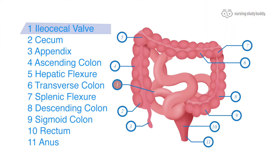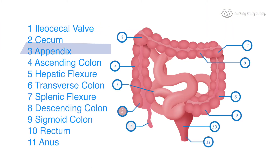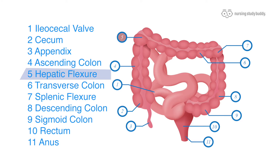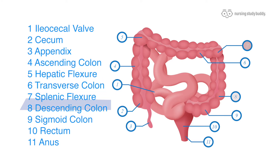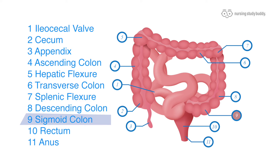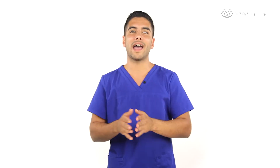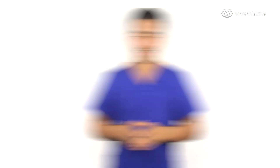First we have the ileocecal valve, then the cecum, the appendix, the ascending colon, the hepatic flexure, the transverse colon, the splenic flexure, the descending colon, sigmoid colon, rectum, and anus. We also have the external sphincter of the anus and the internal sphincter of the anus.